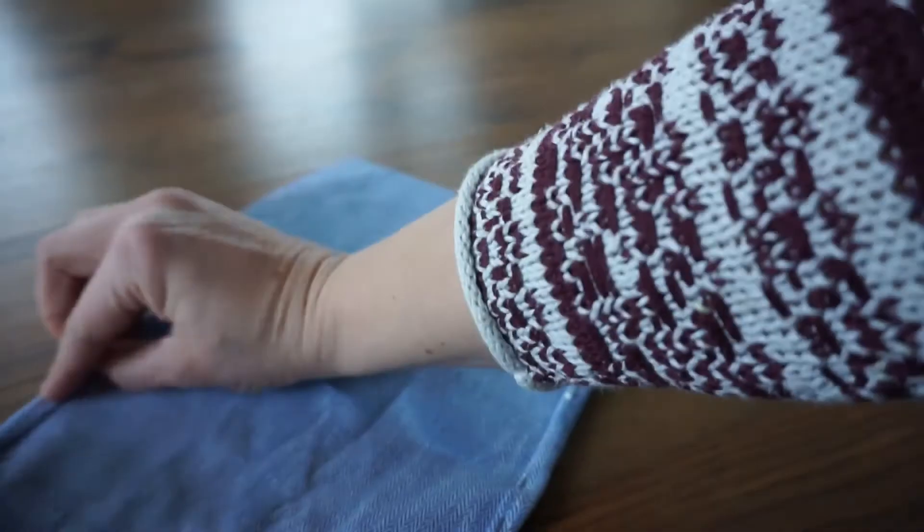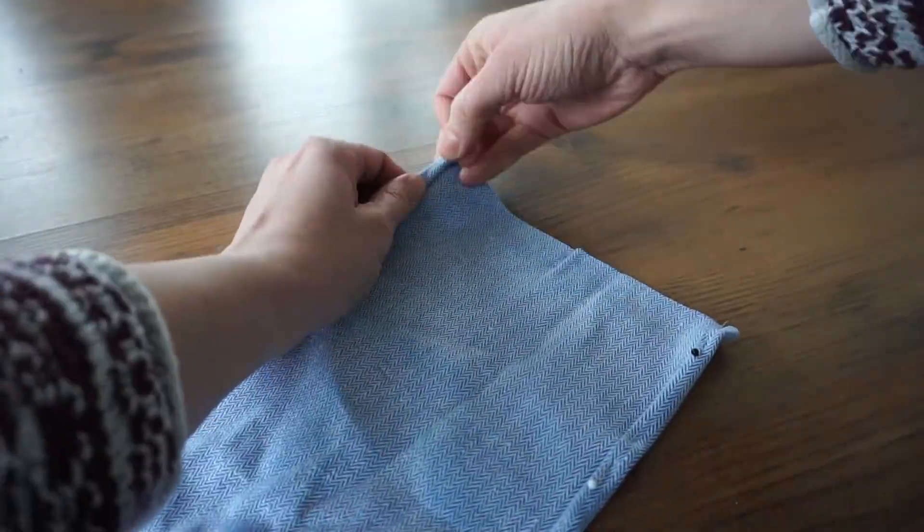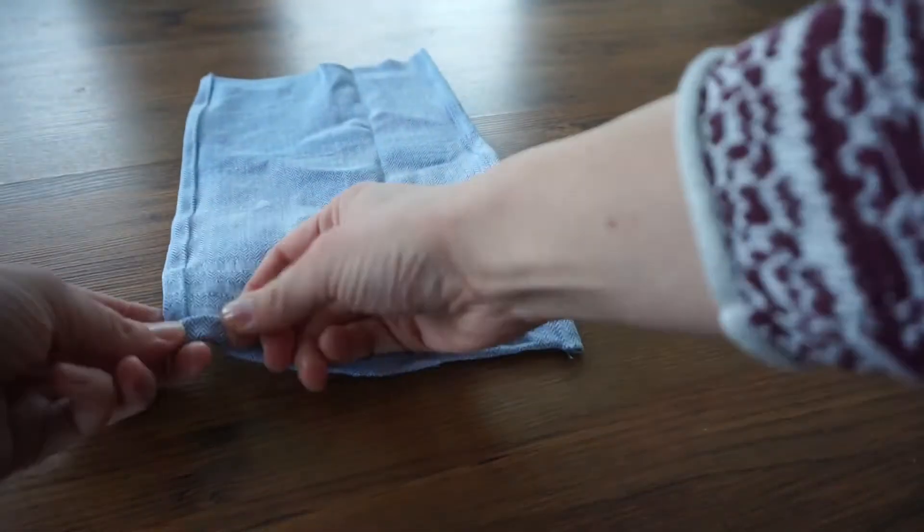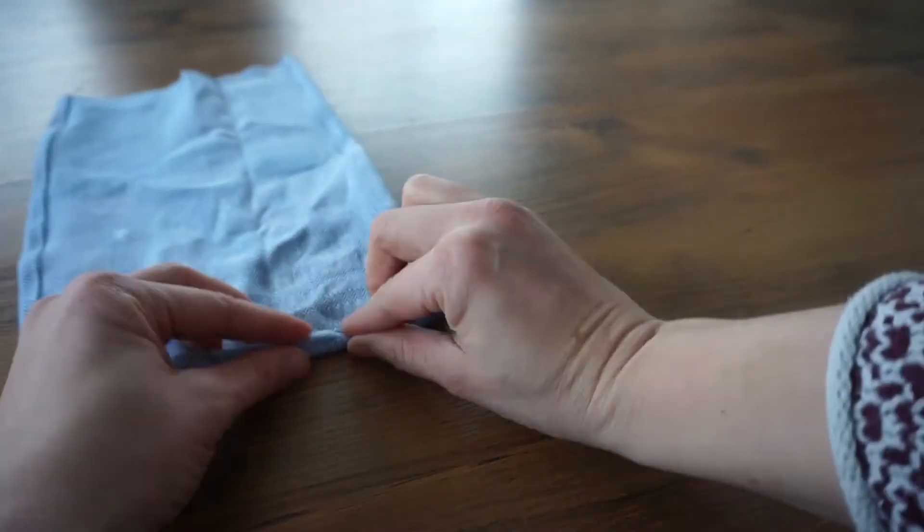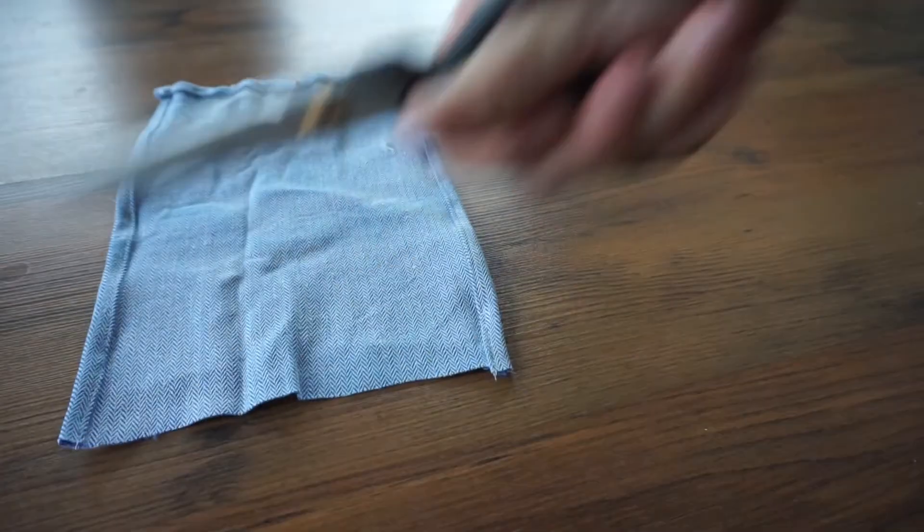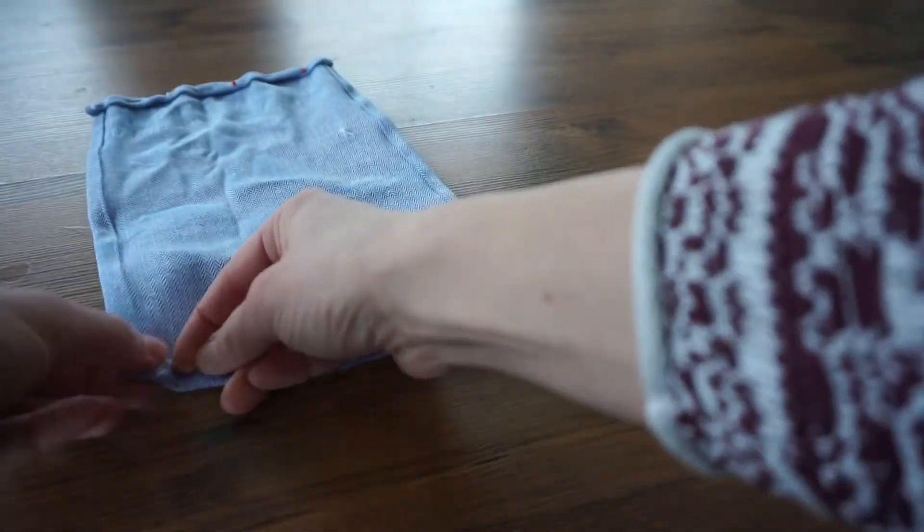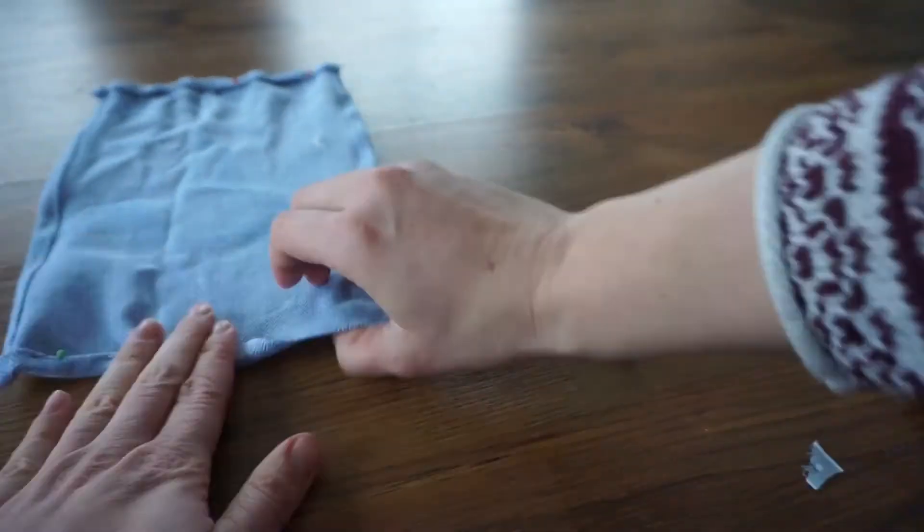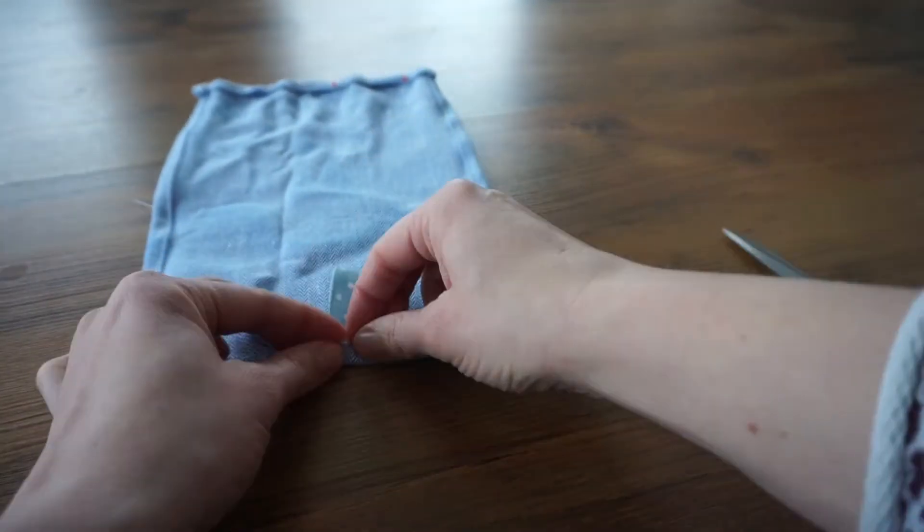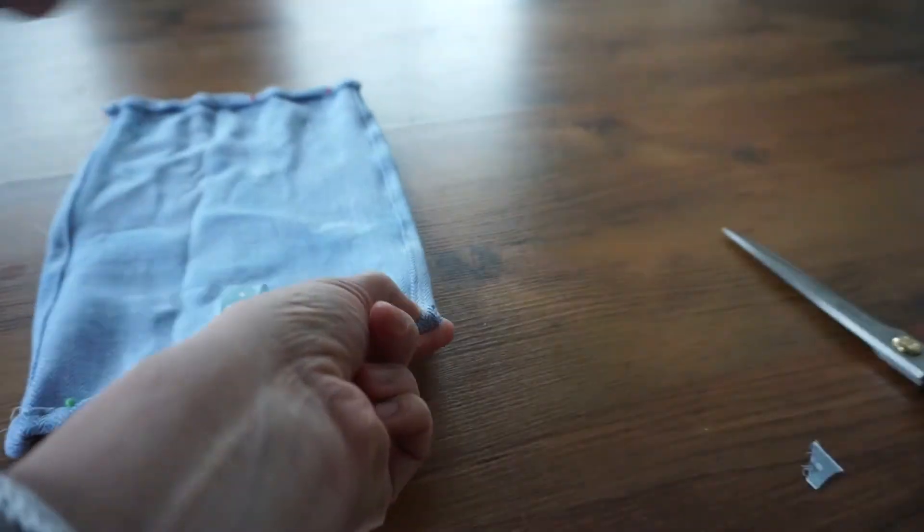Als erstes schlage ich die beiden langen Seiten doppelt um und stecke sie fest. Die beiden Kanten werden nun gesäumt. Nun werden auf die gleiche Weise die kurzen Kanten festgesteckt. Dabei steckt ihr an der oberen Mitte ein Stück doppelt gelegtes Schleifenband mit fest, das später die Aufhängung des Geschirrtuchs sein soll. Jetzt noch die beiden abgesteckten Kanten nähen und schon ist das Geschirrtuch in Puppengröße fertig.